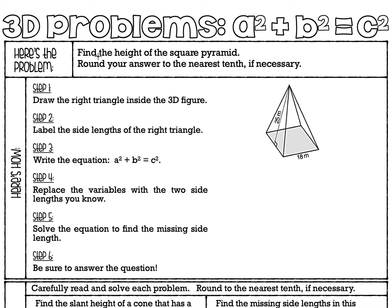Here is the first problem. We are going to find the height of the square pyramid and round the answer to the nearest tenth if necessary. A square pyramid means the base is the shape of a square — this gray base is 18 meters on each side. Now, you have to visualize the right triangle standing up inside this pyramid, because they're asking us to find how tall it is. This 25 on the side is not the height because that measure is on a slant.